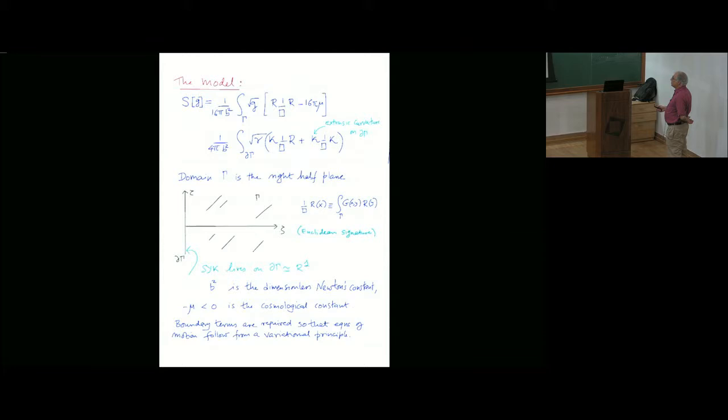Here is our model. This is the cosmological constant term. This is the one that comes from the coadjoint orbit construction. Then, of course, we have a boundary. So that the equations of motion that result from this action are real, true saddle points. The domain, gamma over here, is the right half Poincaré plane over here. Xi is the coordinate here, and tau is the Euclidean time. The SYK model basically, or its relatives, live on this line over here.